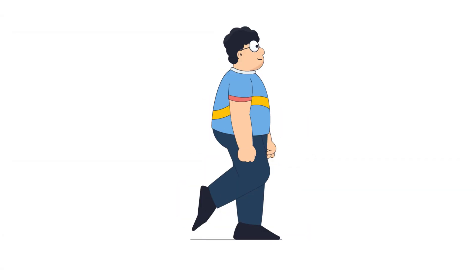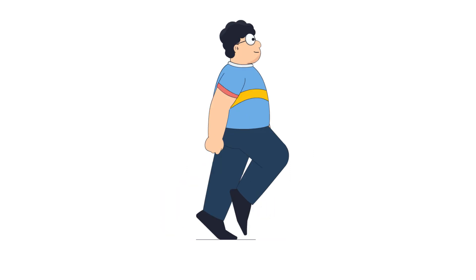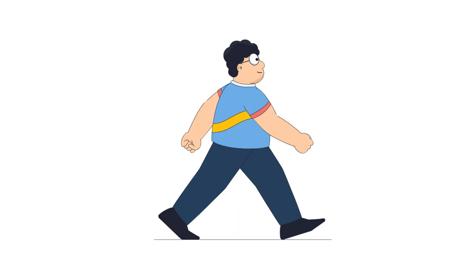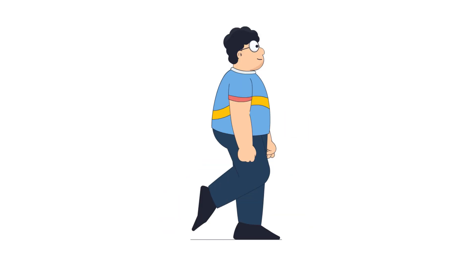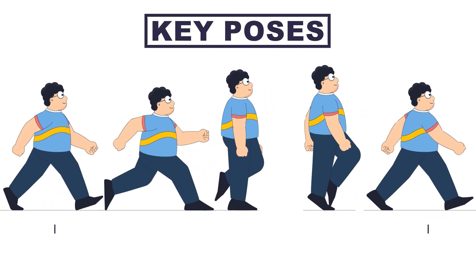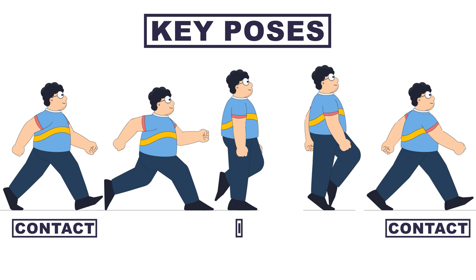Let's take a look at the key poses of a walk cycle. A walk cycle is made up of several key poses that are repeated over and over to create the illusion of movement. The key poses are contact, passing, down, and push off.